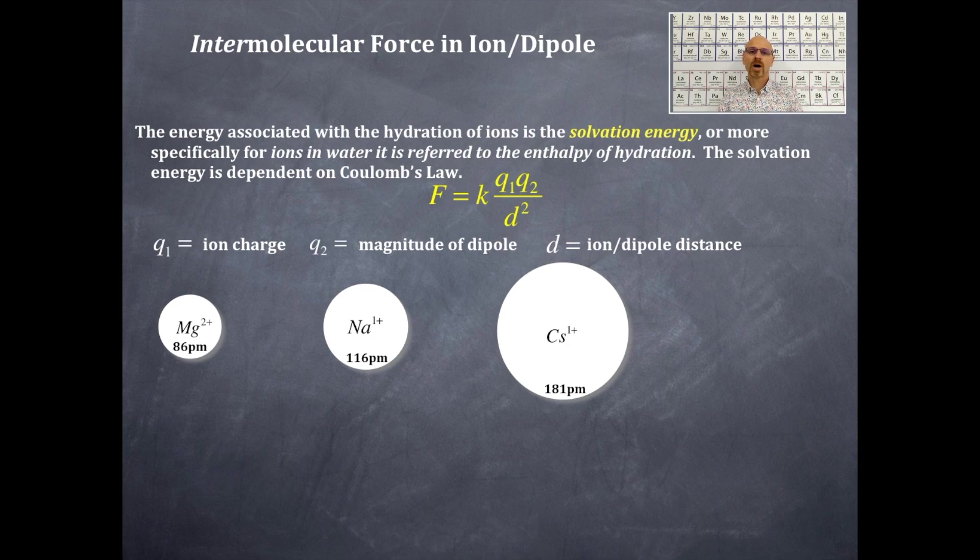So we're going to take a look at water molecules to interact with all these ions. Now, one of the things that is being held constant here is that all of these are interacting with water. The other thing that is being held constant is that all these are cations, but you can apply this to anions just as well. So here's a water molecule interacting with that magnesium ion. Here's a water molecule interacting with the sodium ion, and here's a water molecule interacting with the cesium ion.